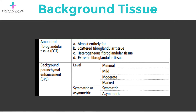The BI-RADS Atlas for interpreting a breast MRI describes two normal factors regarding the background tissue that you need to discuss in any report. First, the amount of fibroglandular tissue. This corresponds to the density identified on a mammogram or on a non-fat-saturated T1 image. It is the same four categories as in mammography.